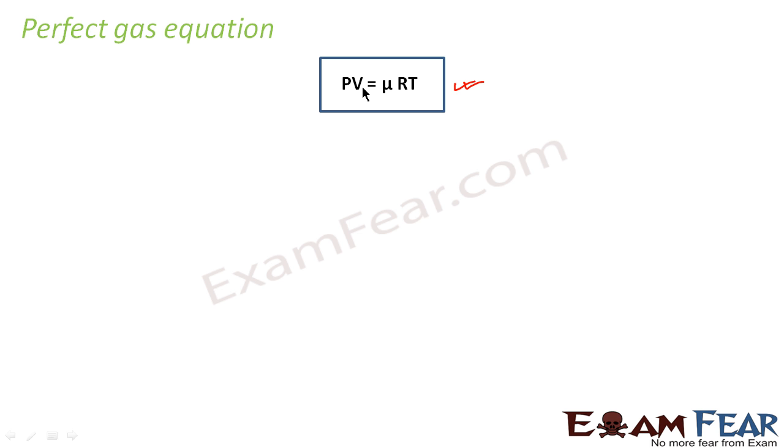Now why is this called perfect gas equation? Because this equation tells about the behavior of a gas at a particular circumstance or situation. As I told, this equation is satisfied by a gas at low pressure and high temperature. Now if a gas satisfies this equation we say that the gas is a perfect gas or an ideal gas.